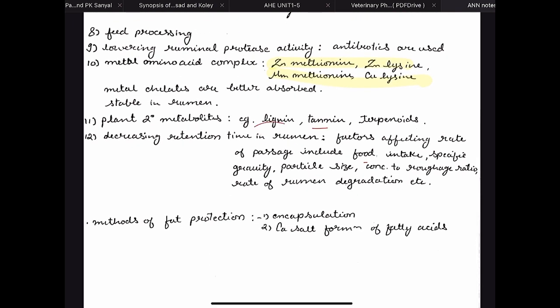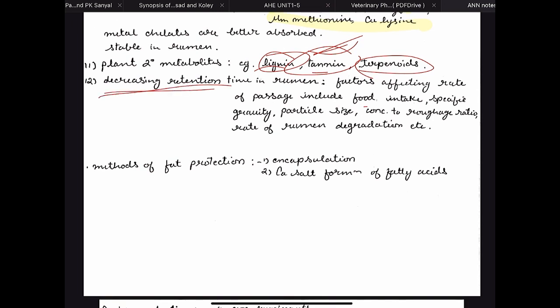Then plant secondary metabolites like lignin, tannin, and terpenoids — the tannin one is most important for exams. Tannin is an anti-nutritional factor that decreases the solubility and absorption of proteins, but we can use this property to our advantage. We can treat feed with tannins that are resistant to rumen digestion but become digestible when they enter the intestine.